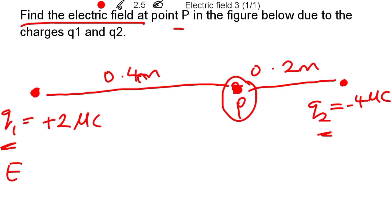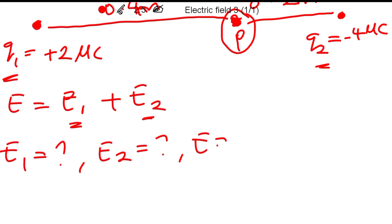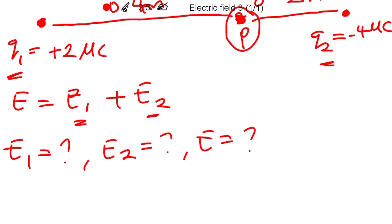Our main goal is to find the total electric field, which is the combination of the electric field due to the first charge q1 and the electric field due to the second charge q2. But before then, we have to know the value of E1 and E2. We need to find these in chronological order.